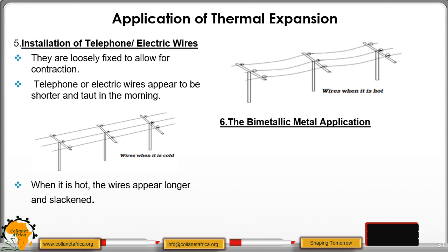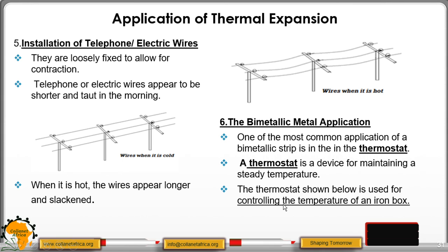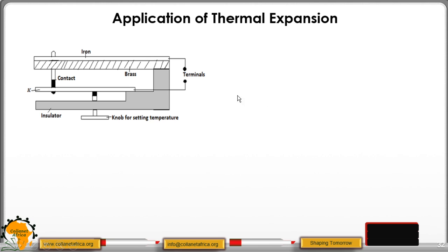Another application is the bimetallic metal application. In this case we have one bimetallic strip that is commonly used, the thermostat. Thermostat is a device for maintaining a steady temperature. Thermostat can be used to control the temperature in electrical devices like iron box, or it can also control the temperature of a given room. In our case here, we are going to use a thermostat that is used to control the temperature of an iron box, as shown in our diagram. We have the terminals where we connect to the power source. We have the knob for setting the temperature. We have the insulator here. We have the contact. Then we have our bimetallic strip made up of brass and iron, and here we have the contact.